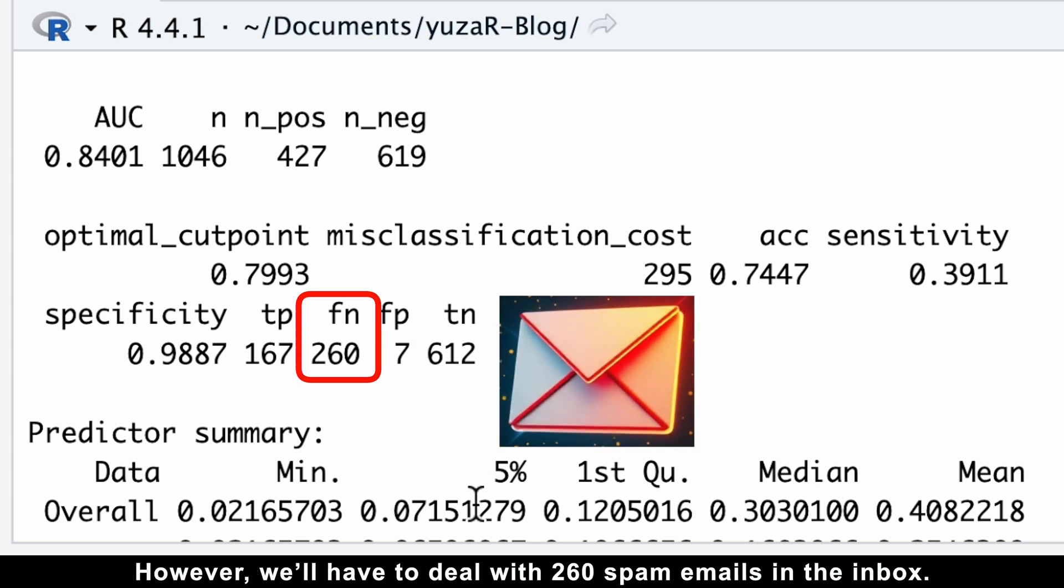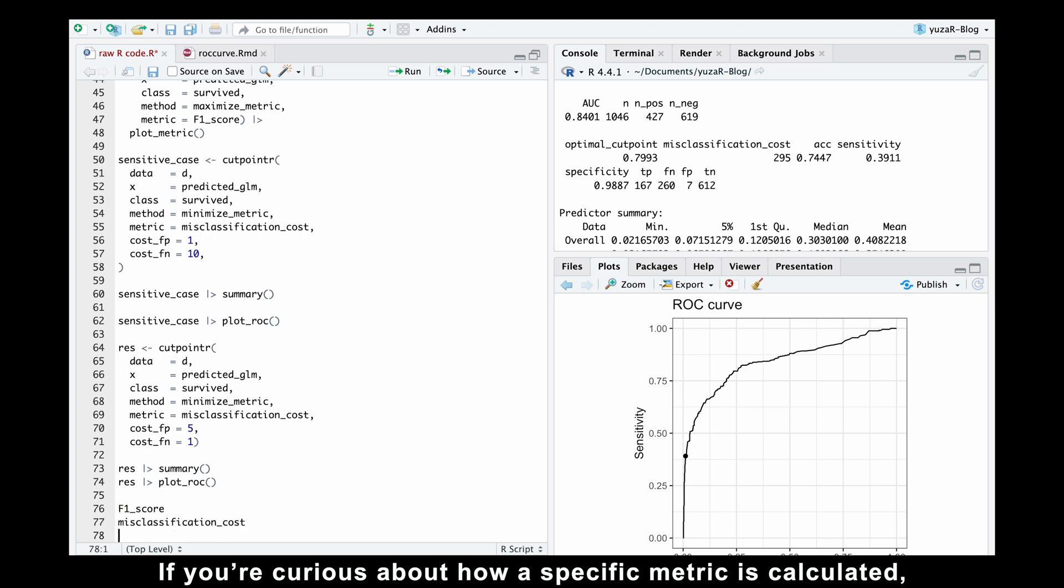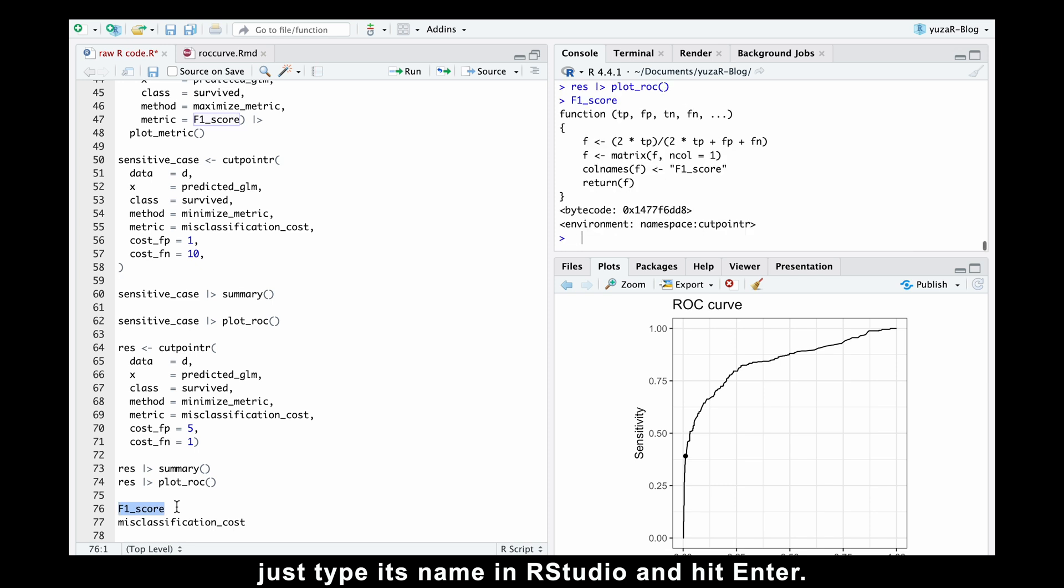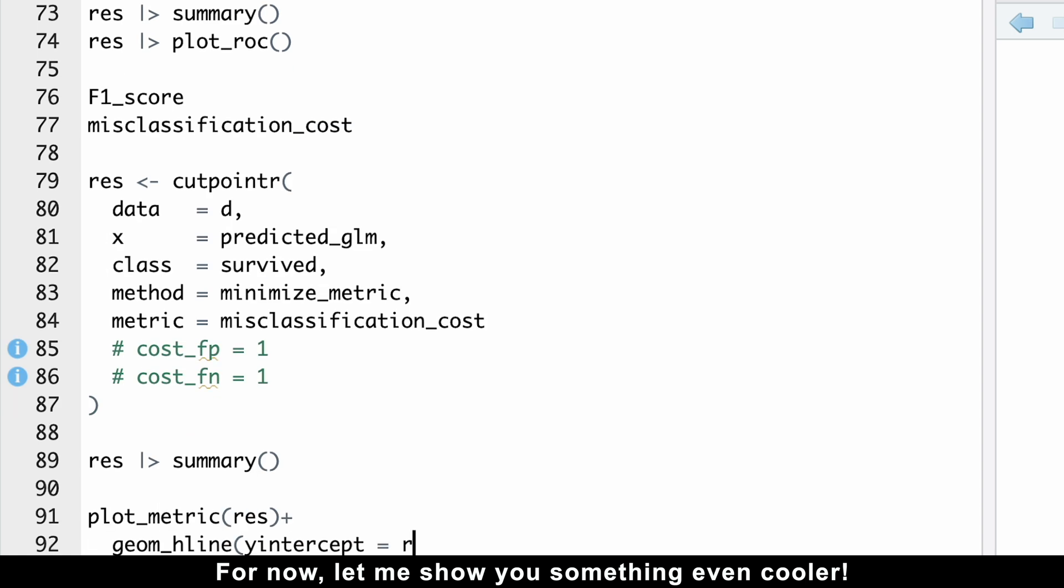However, we'll have to deal with 260 spam emails in the inbox. If you are curious about how a specific metric is calculated, just type its name in RStudio and hit Enter. I'll cover these metrics in more detail in another video. For now, let me show you something even cooler.